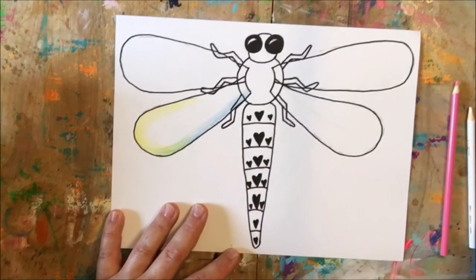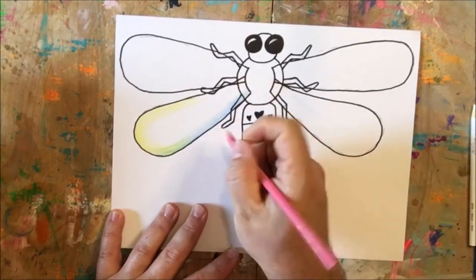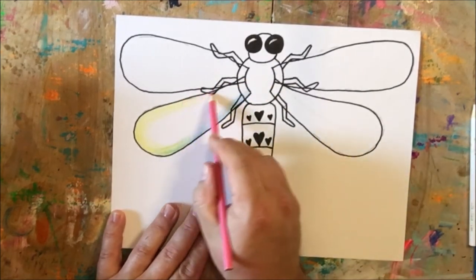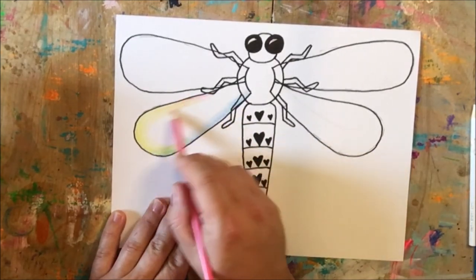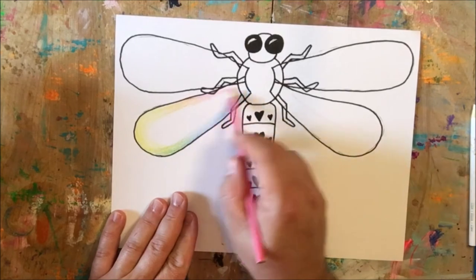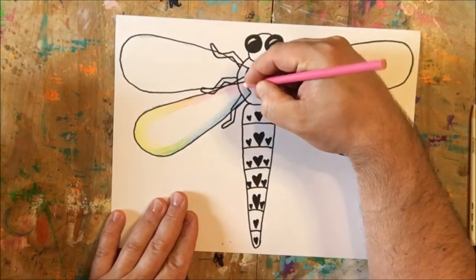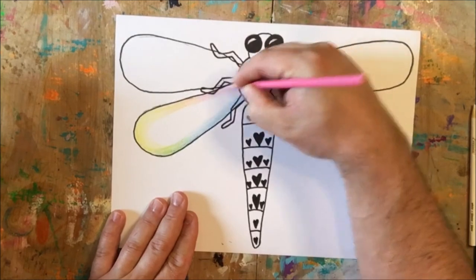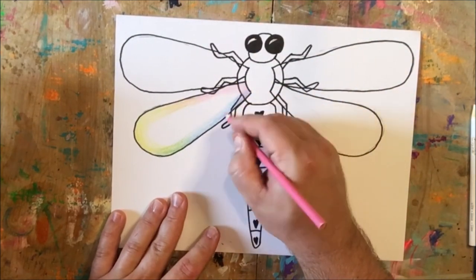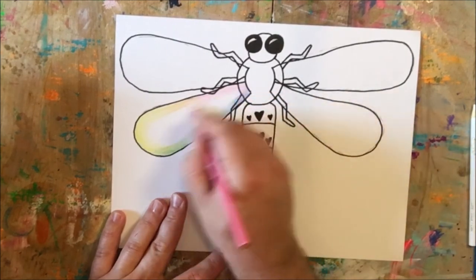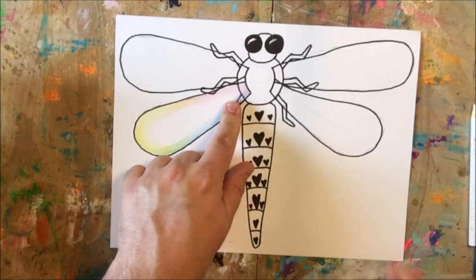And then I'm going to move on to the pink. And so the pink is going to kind of work in this leftover area here. Once again, I'm coloring lightly with my pink. And I'm just overlapping where the pink and the yellow are. And before I'm done, I'm actually going to overlap where the pink and the blue are as well. So we create a little bit of purple in our wing as well.